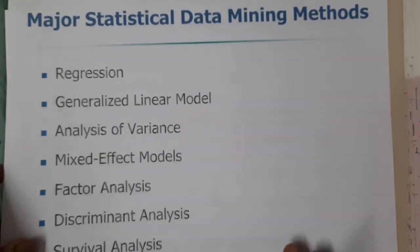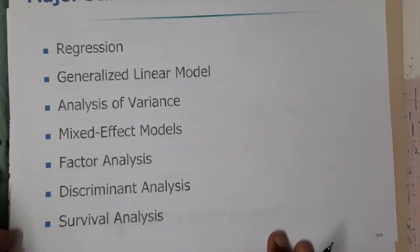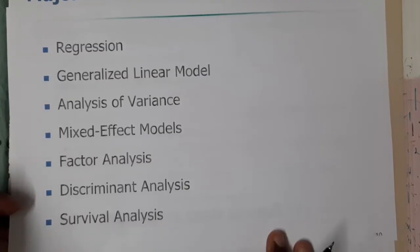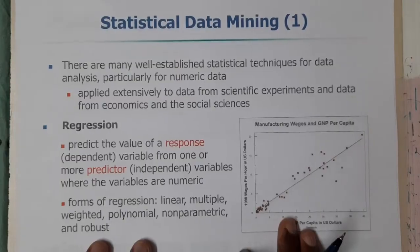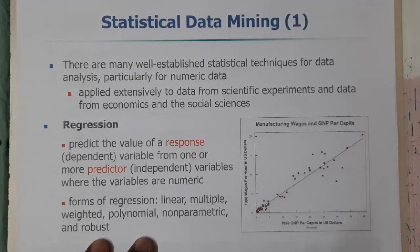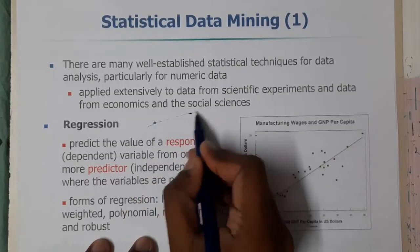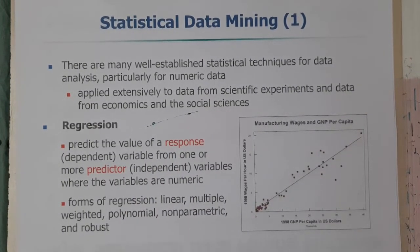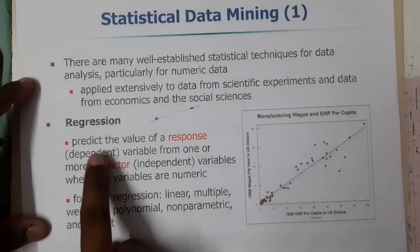So we are having these many types under statistical data mining: regression, the general linear model, analysis of variance, a mixed effect model, factor analysis, discriminant analysis, and survival analysis. The first topic is regression — predicting a value using other values, using previous values or some given values to predict other values. This concept is called regression.